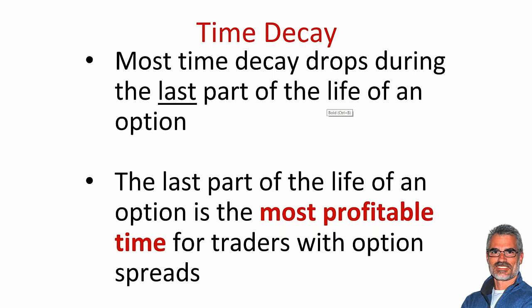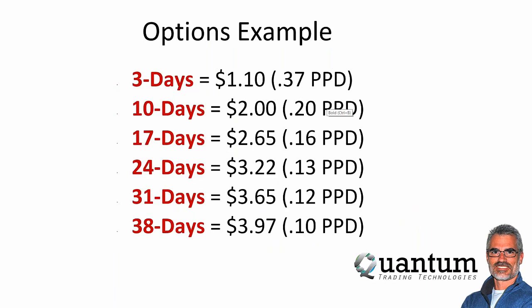When you have Monday, Wednesday, and Friday option expirations, you've got a continual pipeline of significant time decay to try and take advantage of — happening over and over and over again. Before weekly options, you didn't realize the majority of time decay except for once a month, a couple of days before a monthly option expired. Now we've got this pipeline of time decay, and the last part of the life of an option is the most profitable time for traders trading option spreads designed to take advantage of time decay.